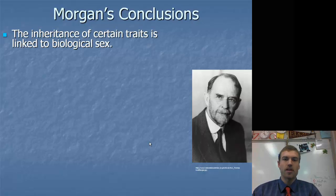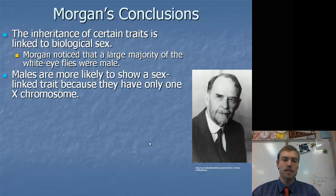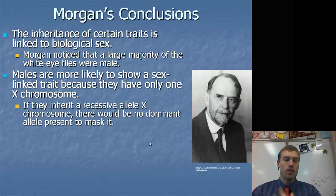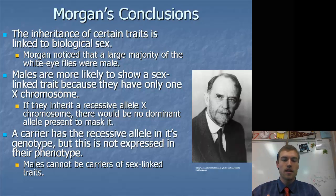These are some of the conclusions. The inheritance of certain traits is linked to biological sex, which makes sense based on what we just looked at. The large majority of the white-eyed flies were male. Sex-linked traits affect males much more than they affect females. That is because they only have the one X chromosome. If you inherit the recessive allele that is on the X chromosome, you're going to get that trait because there's no dominant allele present. A carrier has the recessive allele in its genotype but is not expressed. Males cannot be carriers. Only females can be carriers.